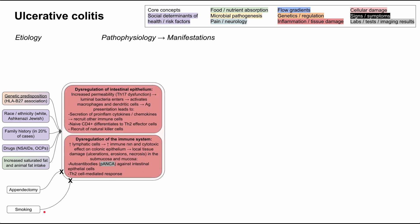Now let's talk about the main pathophysiology of ulcerative colitis, which is twofold. There's dysregulation of the intestinal epithelium and dysregulation of the immune system. On the epithelial side, you'll have increased permeability due to Th17 dysfunction. Luminal bacteria enters the body, activating macrophages and dendritic cells, which present the antigens. This leads to secretion of pro-inflammatory cytokines and chemokines, recruiting other immune cells and producing a full-on inflammatory response.